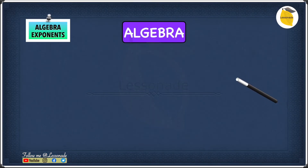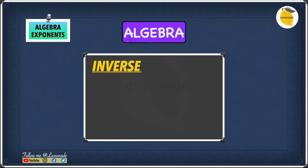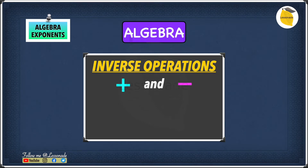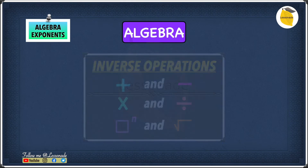The key thing about exponents in algebra is that we have inverse operations, just like we do in other areas. Addition and subtraction are inverse operations; multiplication and division are also inverse operations. Similarly, in algebra, exponents and roots are inverse operations — so if you have an exponent and a root, they will cancel each other out. Now that we know this, let's have a look at an example.